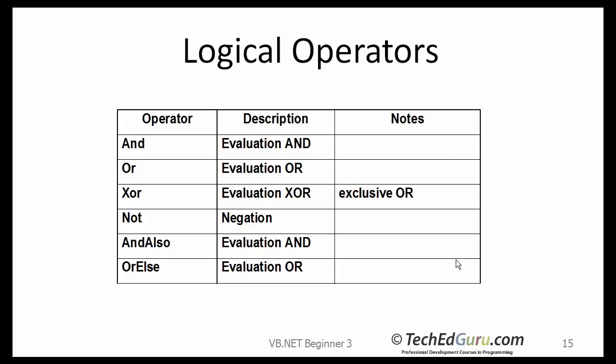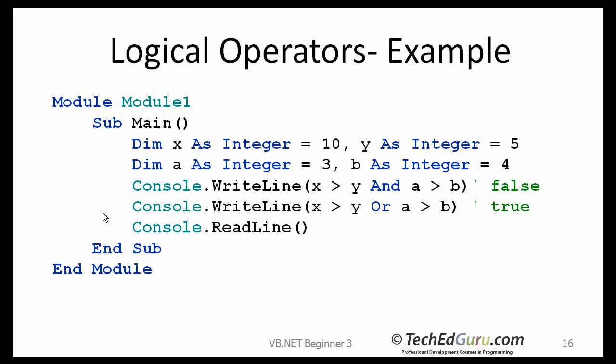We also have the logical operators, AND and OR, which I will demonstrate on the next slide. Logical operators. Here, X is 10, Y is 5, A is 3, and B is 4. The first question I am asking is, is X greater than Y, and at the same time, A greater than B? In this case, the result of this expression is going to be true, if both of these questions will give you yes as an answer. Obviously, that is not the case. So that statement is going to return a false.